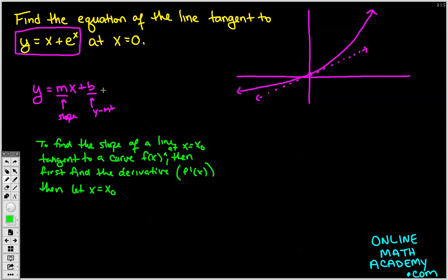Then first you want to find the derivative of the function, and then you want to just plug in whatever x0 is. So in this case, plug in 0. So let's do that. If our function is y, and remember, y and f of x are interchangeable, so y is x plus e to the x, right?